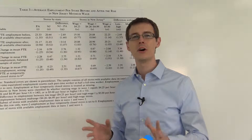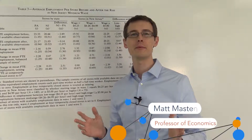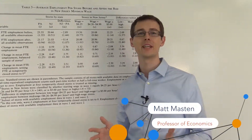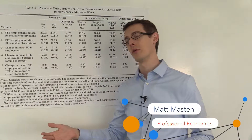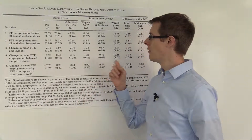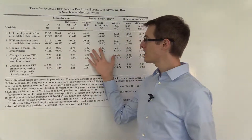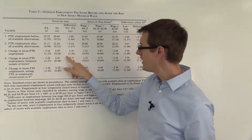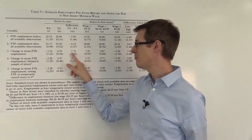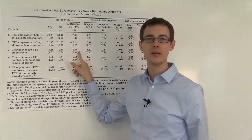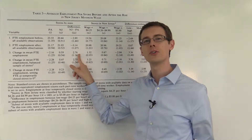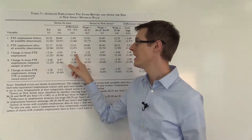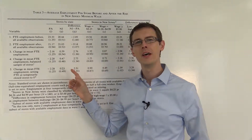In a previous module I talked about the famous paper by Card and Krueger on the effect of the minimum wage on unemployment. I looked at this table which had their main result — this number, 2.76 people. That was the estimated causal effect of the minimum wage on employment, about three people.